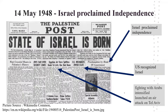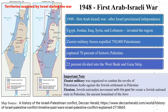Israel proclaimed independence on 14th May 1948; its independence was recognized by the US on the same day. However, the move triggered war with the Arabs, with air attacks on Tel Aviv on the eve of 14th May. Israel's independence triggered the first Arab-Israeli war. Five Arab nations — Egypt, Jordan, Iraq, Syria and Lebanon — immediately invaded the region. Zionist military forces expelled at least 750,000 Palestinians and captured 78% of historic Palestine. The remaining 22% was divided into the West Bank and Gaza Strip.